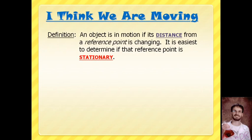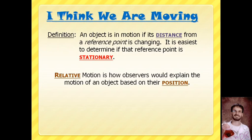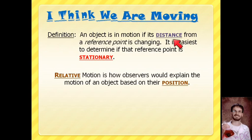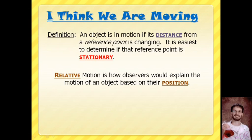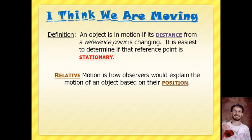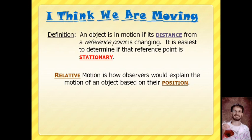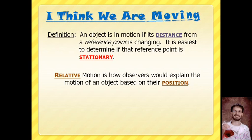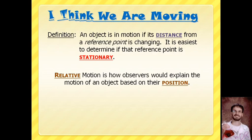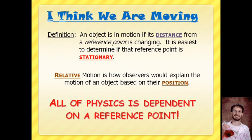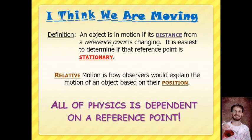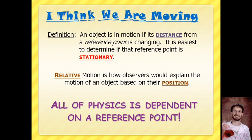So let's get into physics. I think we're moving. Maybe not. An object is in motion if its distance changes based on a reference point. It's easiest to determine if an object is moving if your reference point is stationary, which means it's standing still. If your reference point is moving, it's really hard to tell if something else is moving. So whenever we're doing physics, you always want to make sure that the reference point that you're using is standing still. Relative motion is what you observe based on your position.